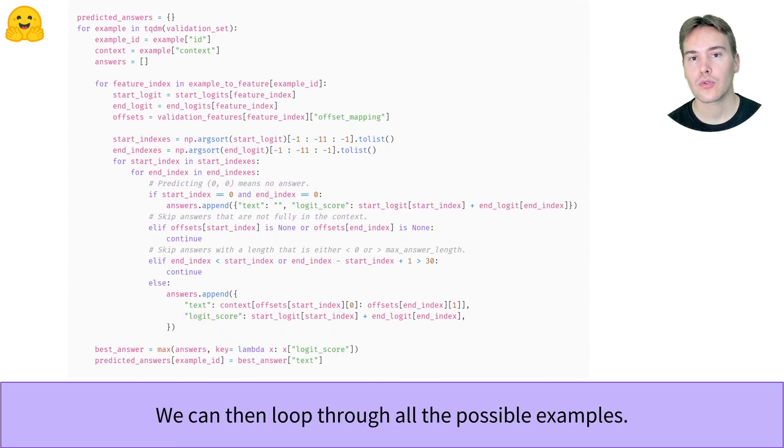Next, we just have to loop this for every example, picking for each the answer with the best logit score in all the features the example generated. Now you know how to get answers from your model predictions.